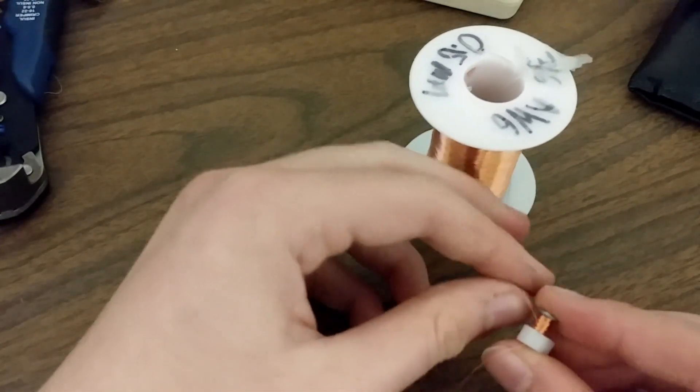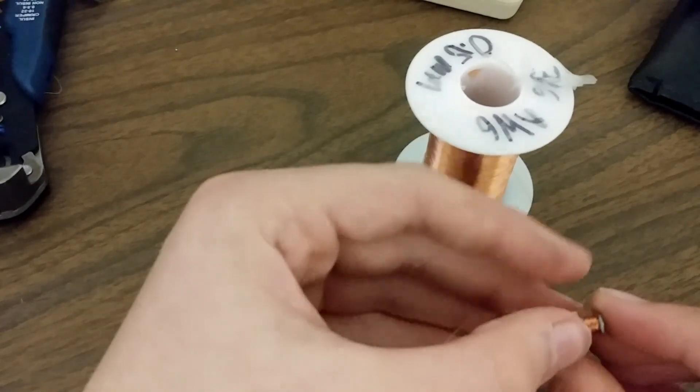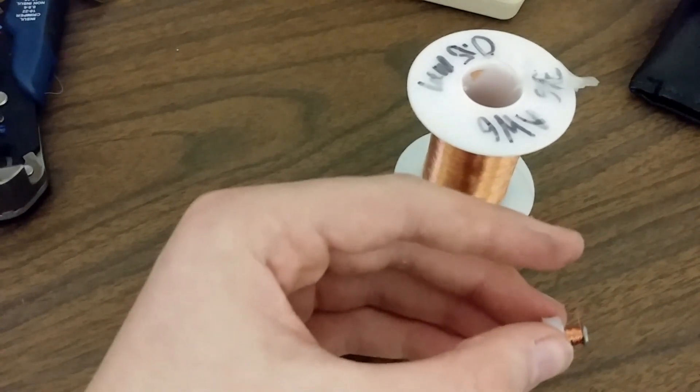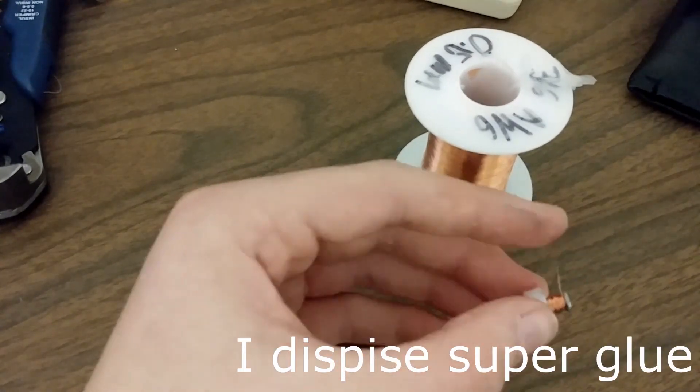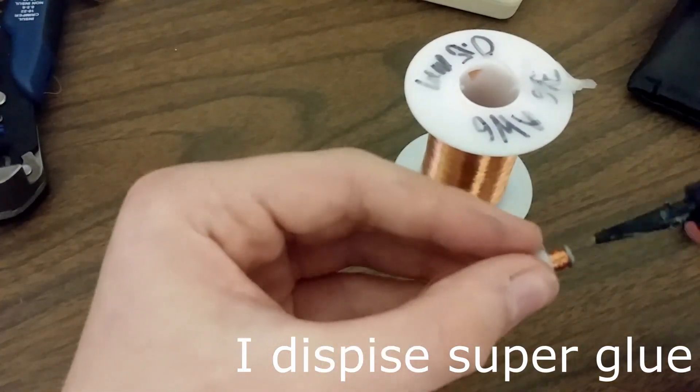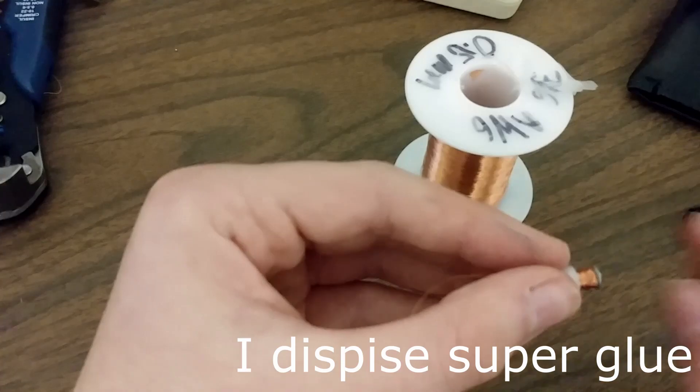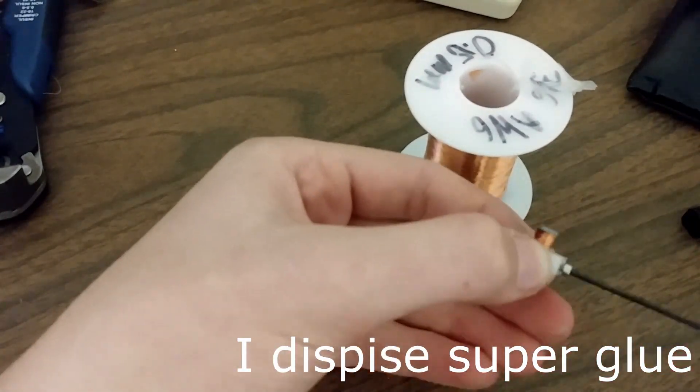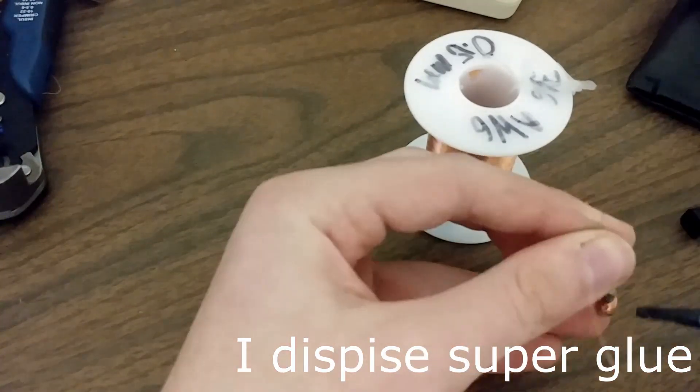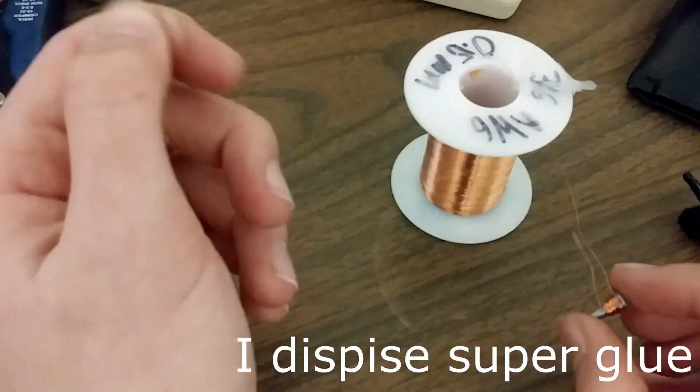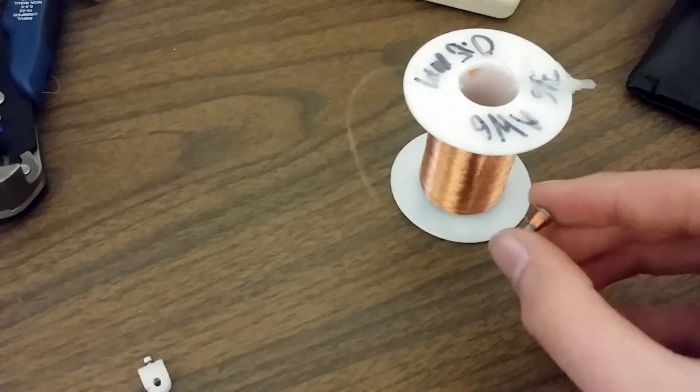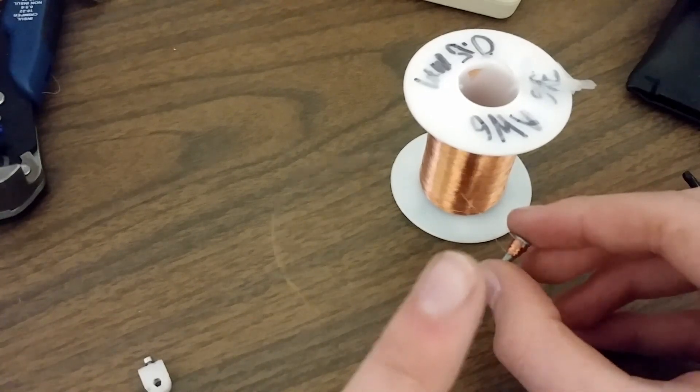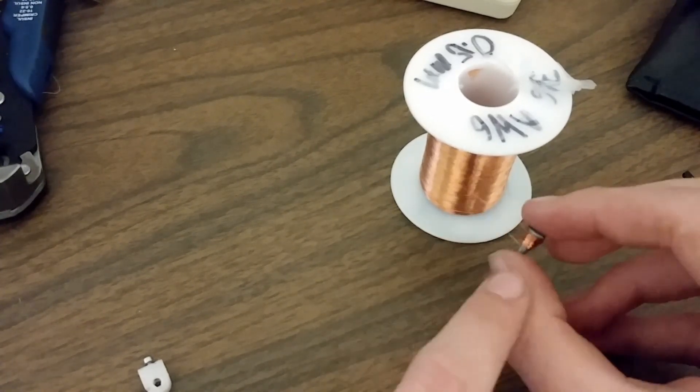Take the copper wire and you just start coiling. Alright, so I've given it 200 turns. And now to hold it in place, I'm going to grab a little bit of superglue. Where'd the superglue go? Alright, so it's superglued and held in place. Now we have a 200 turn electromagnet right there.